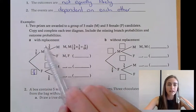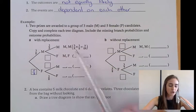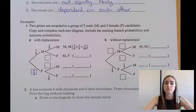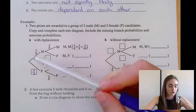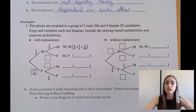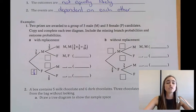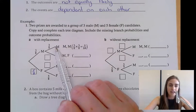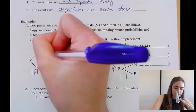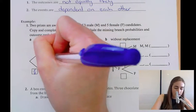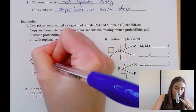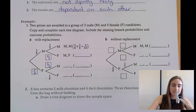With replacement means the same person can be awarded a second prize. After the first prize is given, the whole group of 8 people — 3 males and 5 females — are still eligible for the second prize. So there's still a 3 in 8 chance of a male winning and a 5 in 8 chance of a female winning for the second stage as well.